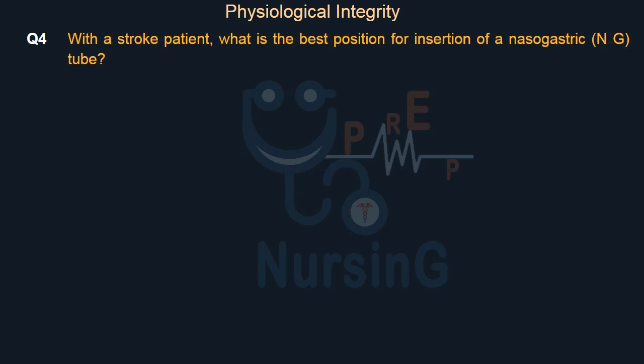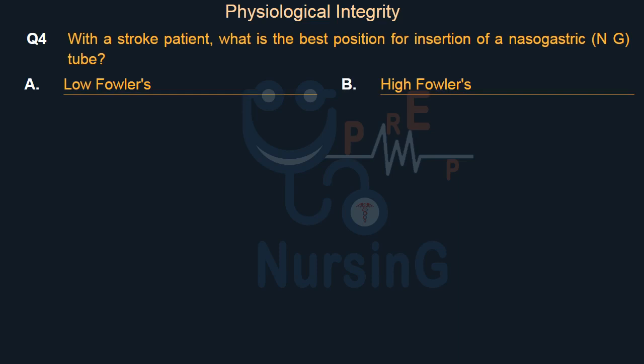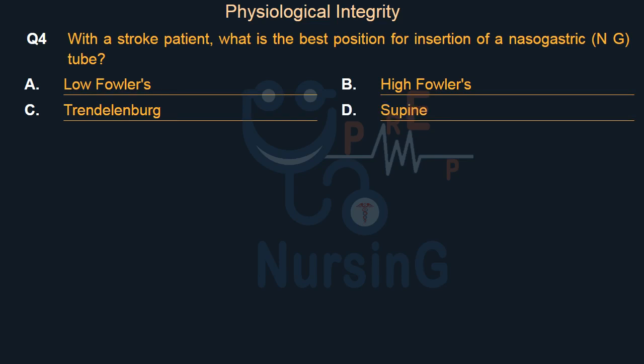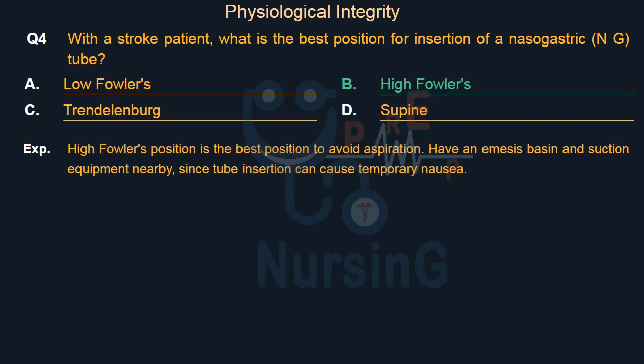With a stroke patient, what is the best position for insertion of a nasogastric (NG) tube? Option A: Low Fowler's. Option B: High Fowler's. Option C: Trendelenburg. Option D: Supine. The right answer is Option B: High Fowler's. High Fowler's position is the best position to avoid aspiration. Have an emesis basin and suction equipment nearby, since tube insertion can cause temporary nausea.